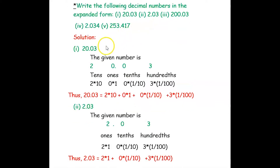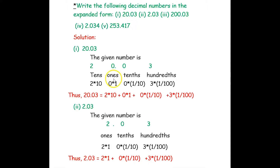Our first question is: write the following decimal numbers in expanded form. The first number is 20.03. We write it down and identify the decimal point. To the left is the integer part and to the right is the decimal part. In the integer part, the digit next to the decimal point is the ones place, then tens. In the decimal part we start with tenths, then hundredths.